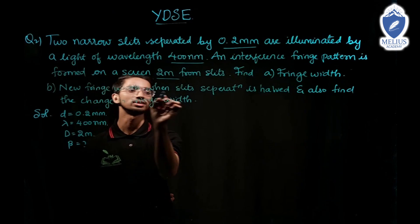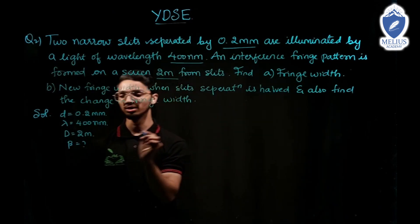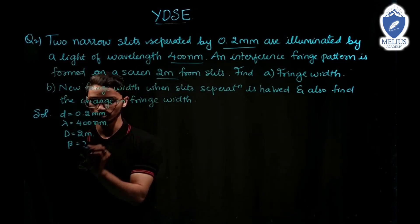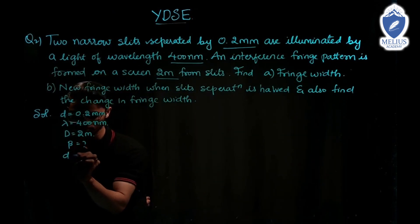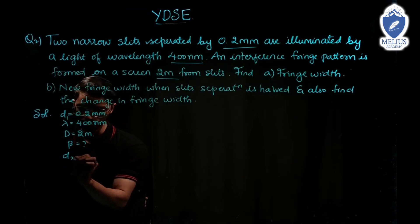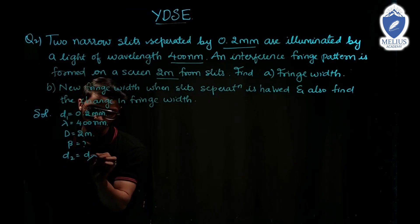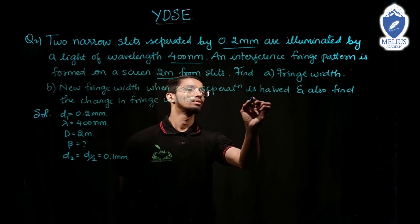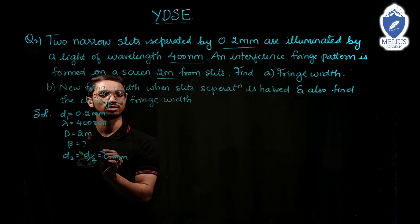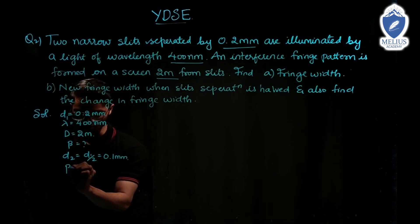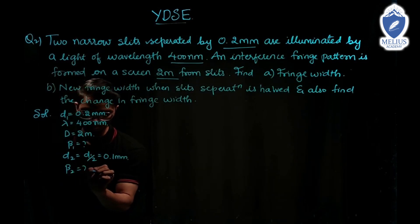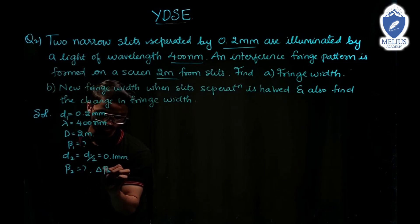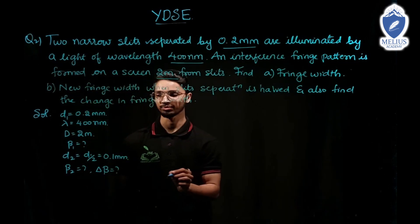Also find the new fringe width when the slit separation is halved. That means d2 equals d1 by 2, which is 0.1 millimeter. Also find delta beta, the change in fringe width. This is beta 1 (original) and beta 2 (new after halving).